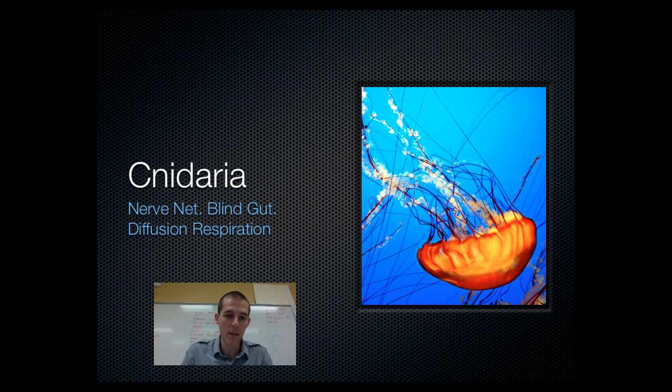As far as cnidaria is concerned, here are the things you need to know. They have the first presence of a nervous system in that they've got a simple net of nerves that covers the inside of their body. They can respond to simple stimuli, but they don't have any direction or cephalization. They have a blind gut, which means that there is one opening for food to go in, and it is the same opening that waste goes out. And they get all of their oxygen and gas exchange by diffusion directly across their epidermis.